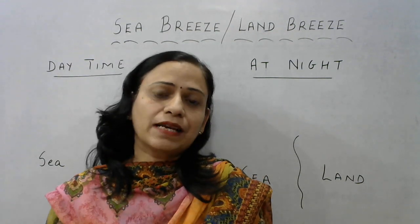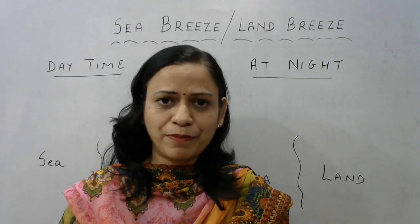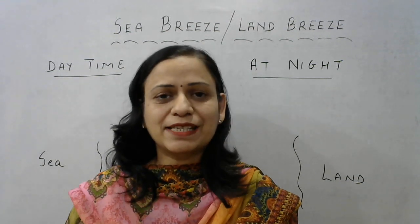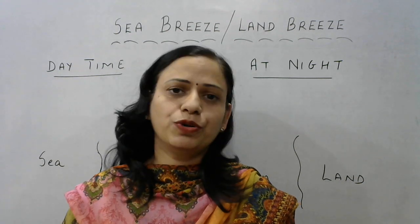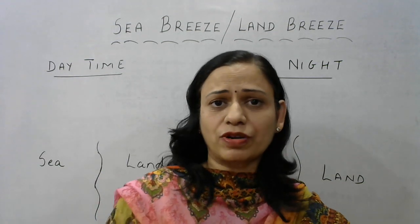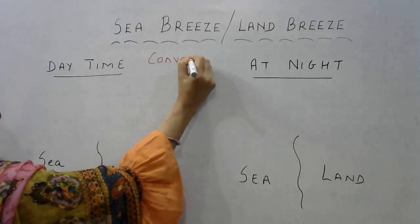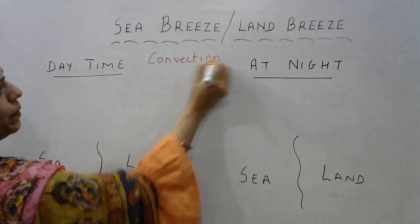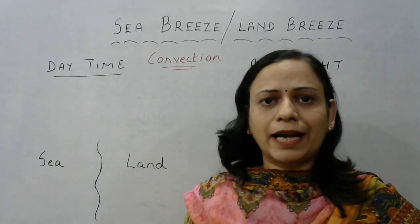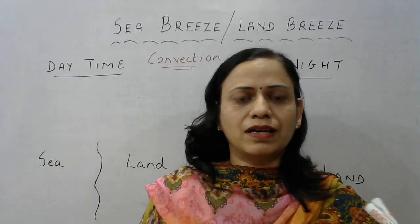Do you know what is the basic principle involved which results in the formation of land breeze and sea breeze? It is based on the formation of convection currents. We have already discussed about convection currents and I have uploaded videos based on it. The phenomena involved here is the phenomena of convection currents, which are set up in the atmosphere due to the uneven heating that occurs between the sea and the land.